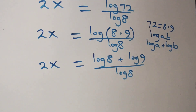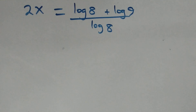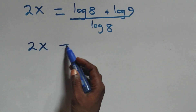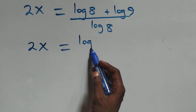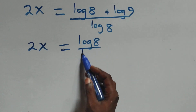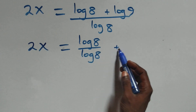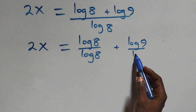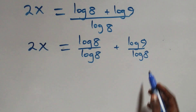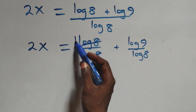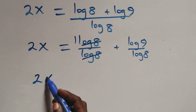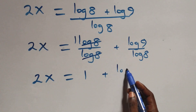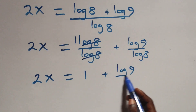We separate this into two fractions: 2x equals log 8 over log 8, plus log 9 over log 8. Here, log 8 over log 8 cancels to give 1, so we have 2x equals 1 plus log 9 over log 8.